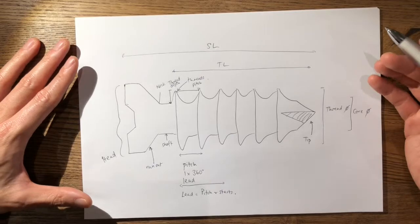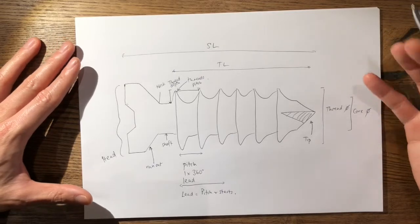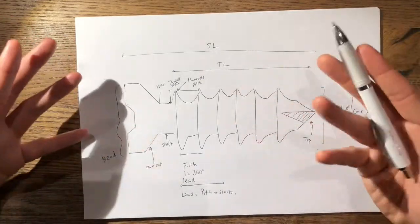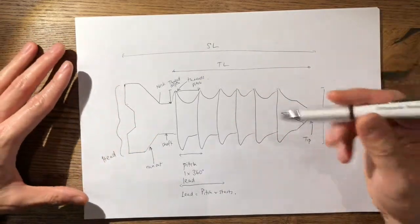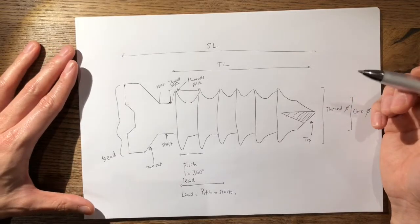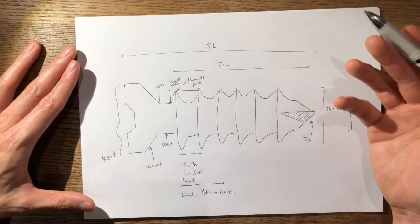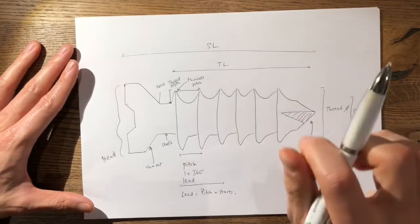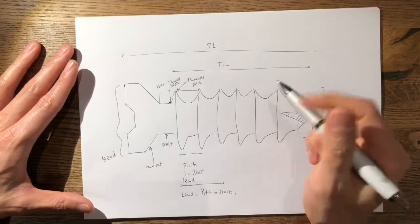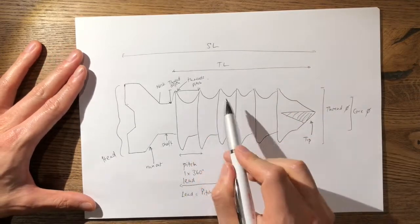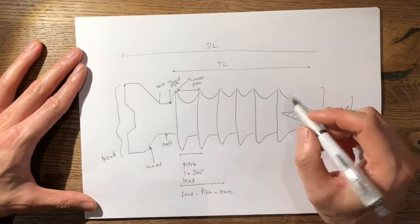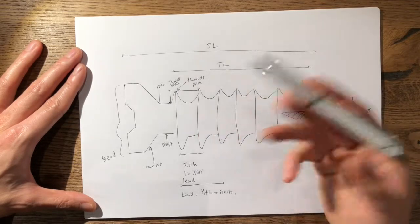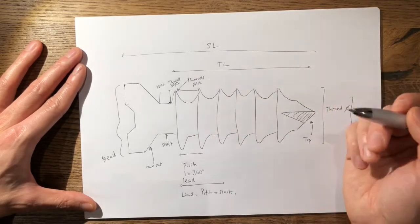You may be asked in the exam about what attributes affect the pullout strength of the screw. Pullout strength can be thought of in terms of the actual surface area that the threads have in contact with the bone — the higher the surface area, the higher the pullout strength.